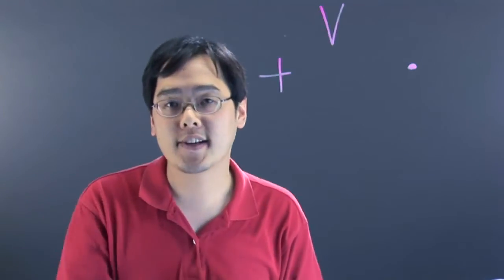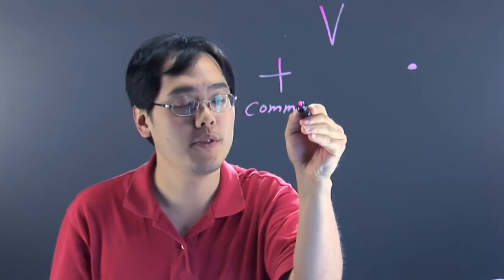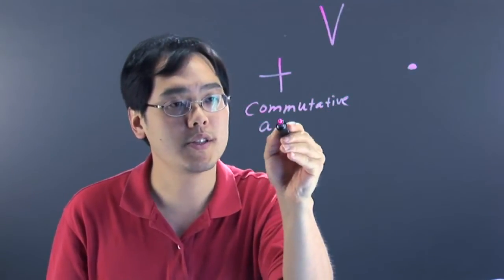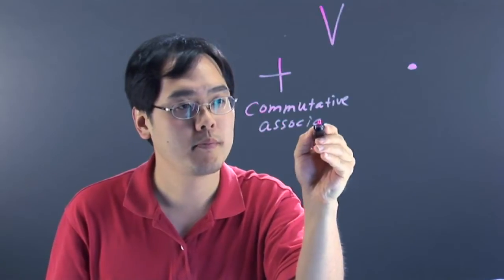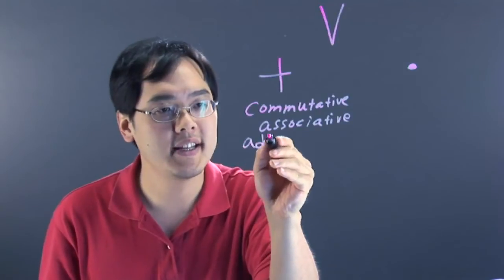In terms of vector addition, it has to satisfy the following properties: the commutative property, the associative property, and it must have an additive identity.